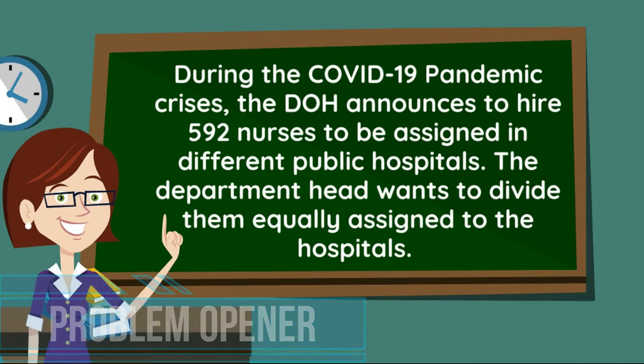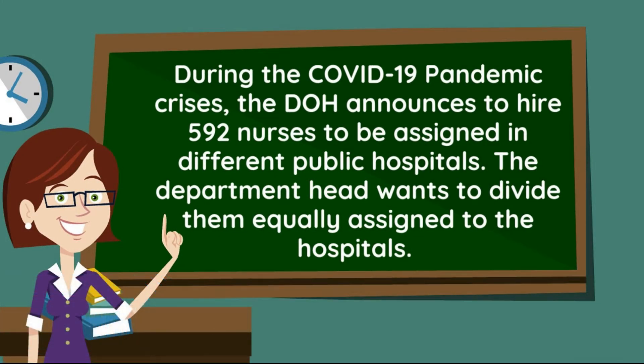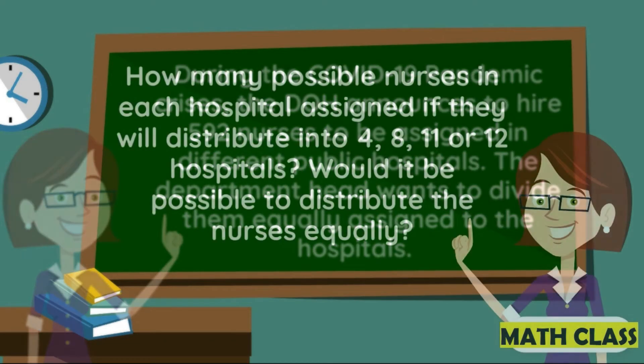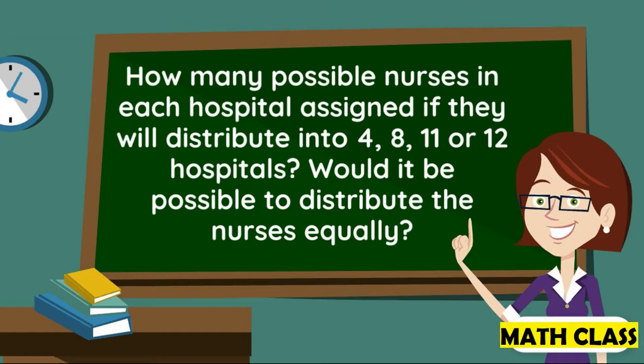Problem Opener: During the COVID-19 pandemic crisis, the DOH announces to hire 592 nurses to be assigned in different hospitals. The department head wants to divide them equally among the hospitals. How many possible nurses in each hospital if they distribute into 4, 8, 11, or 12 hospitals? Would it be possible to distribute the nurses equally?